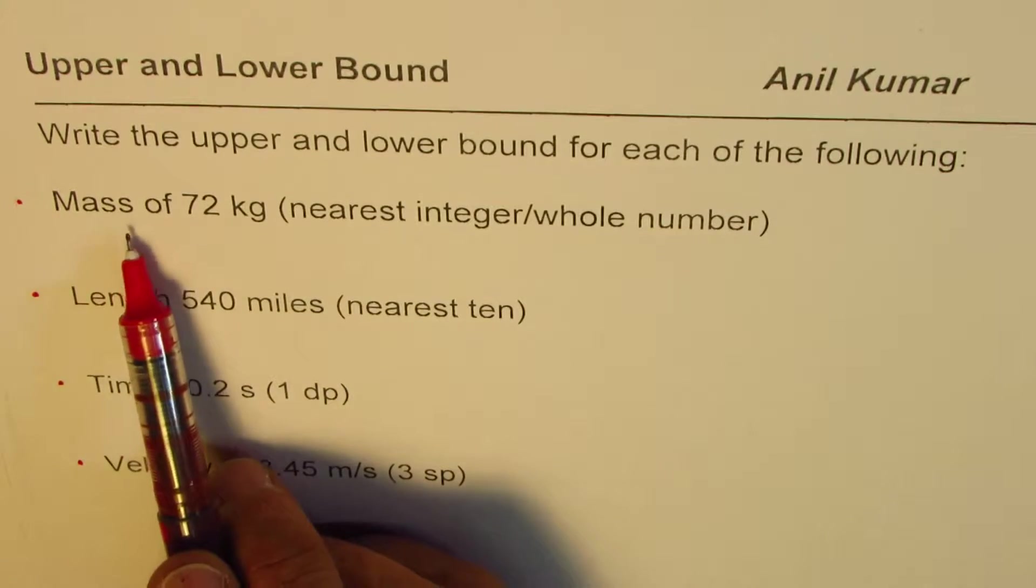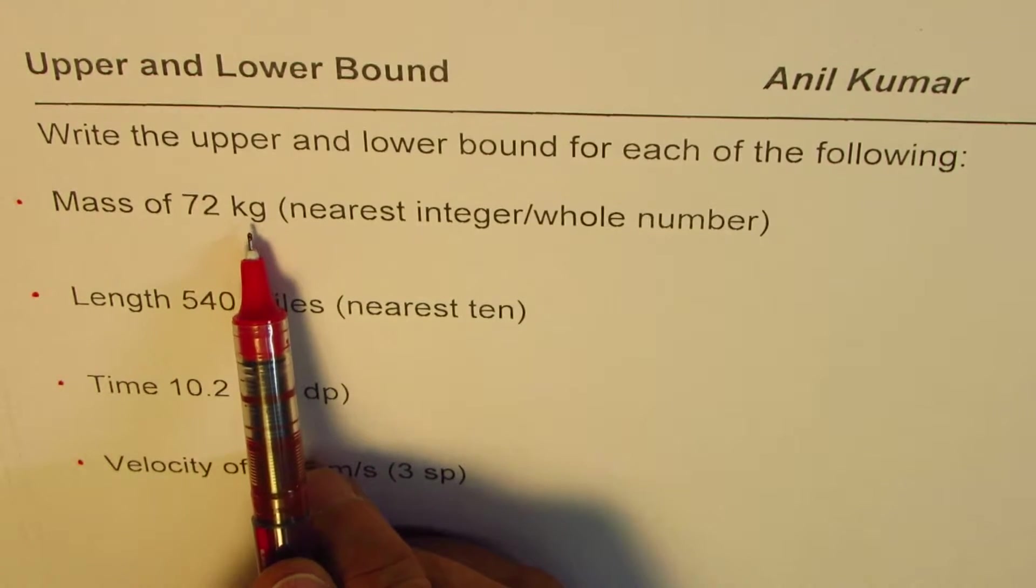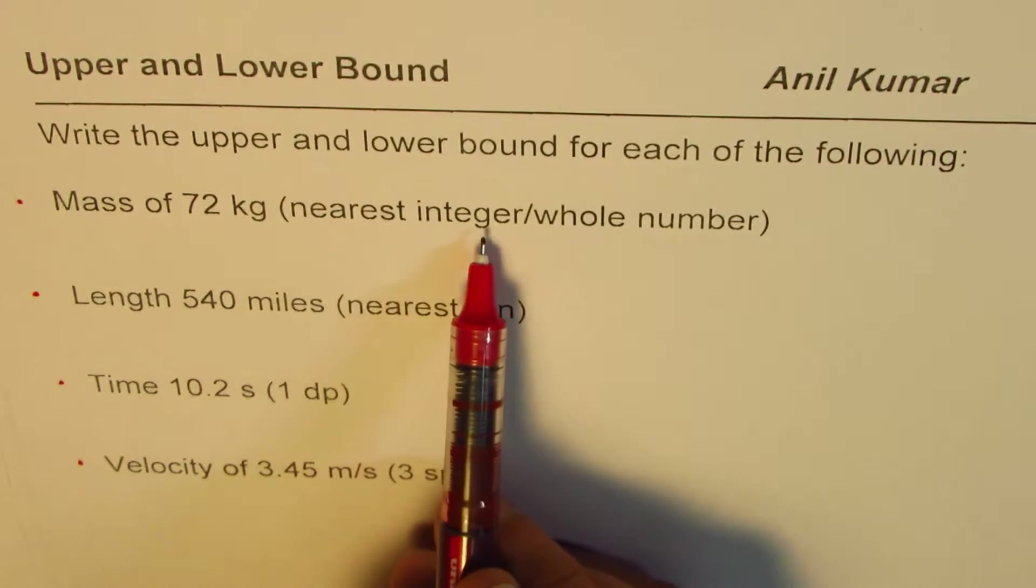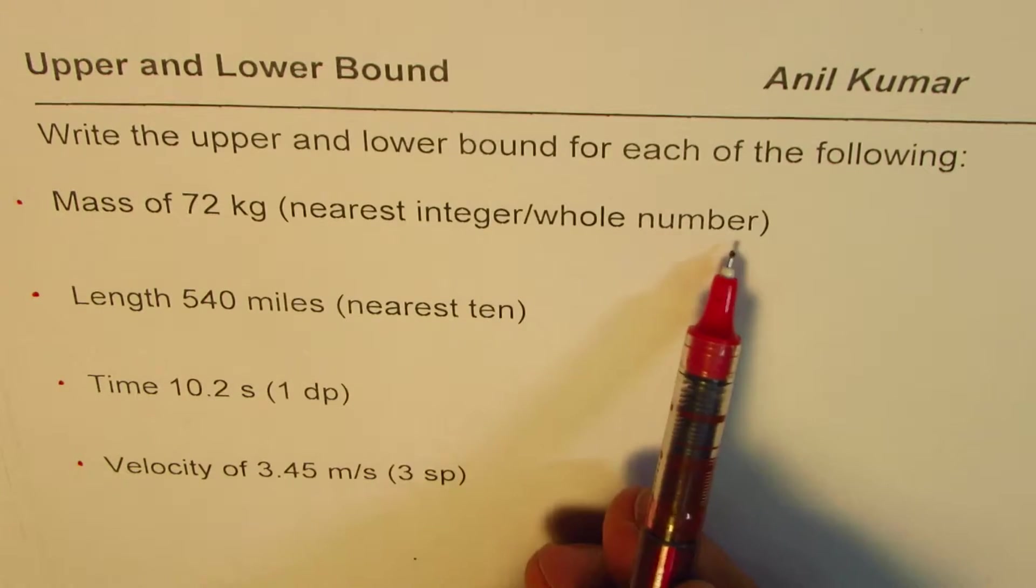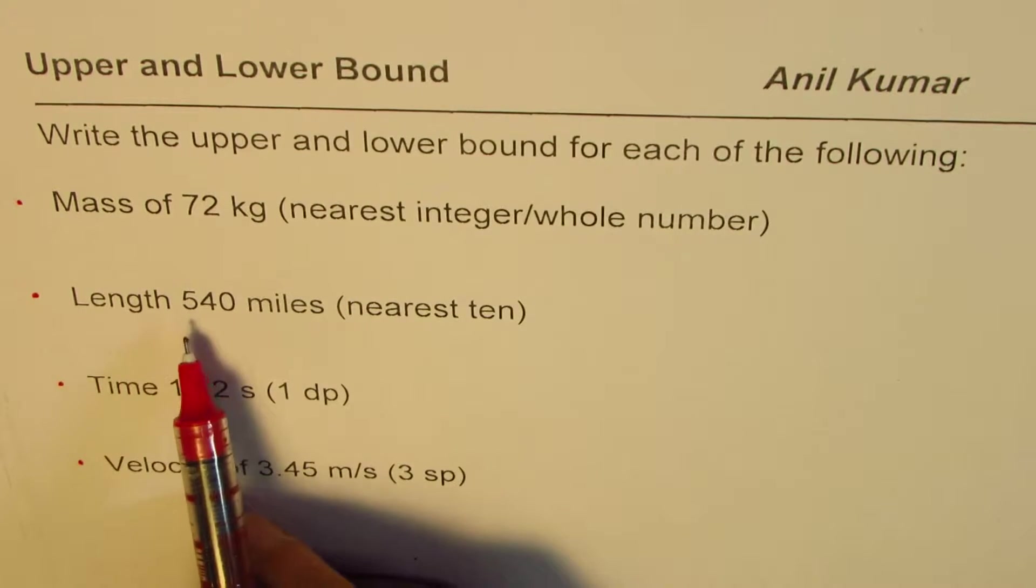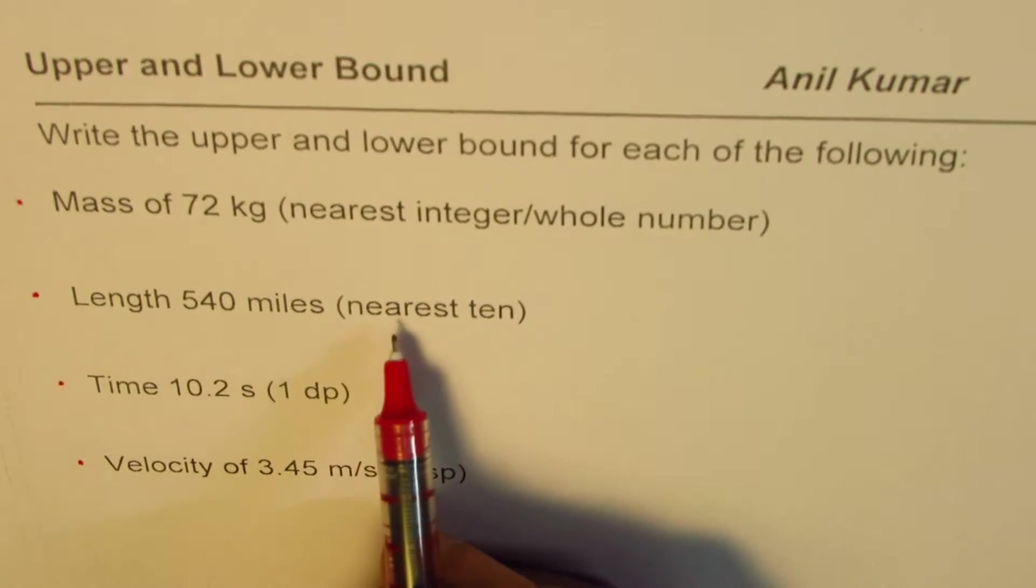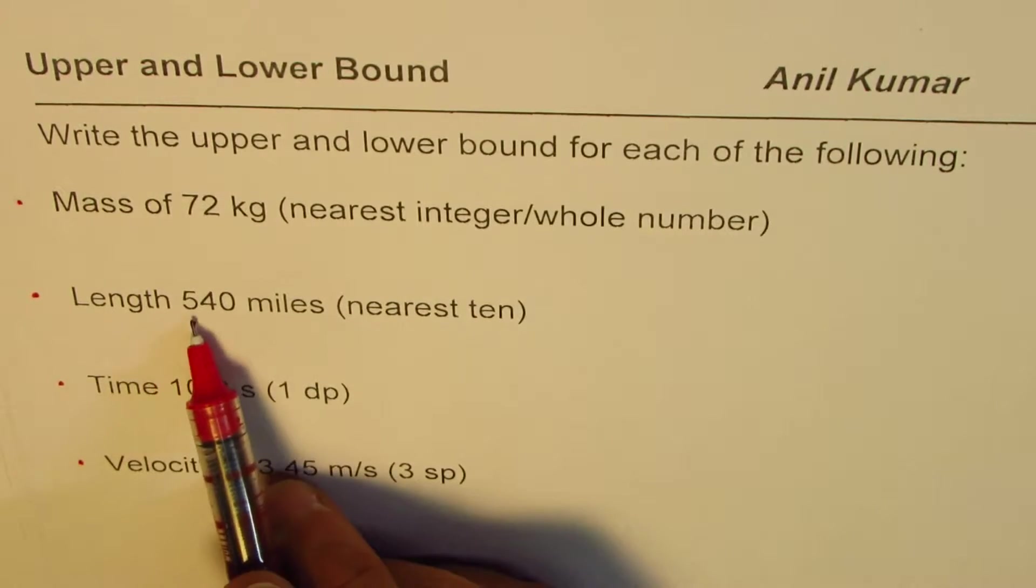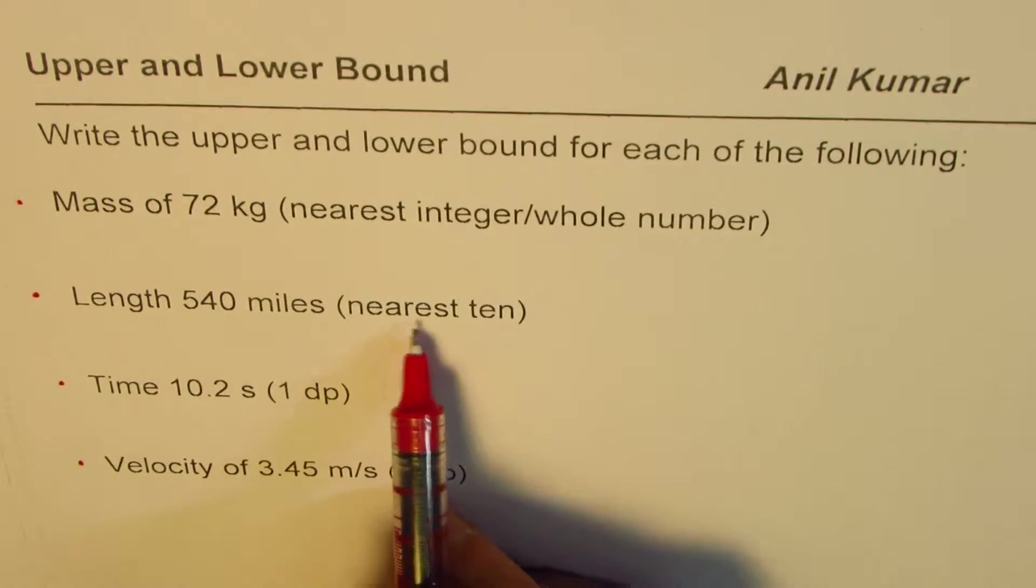Normally they are rounded to some value. In this case mass of 72 kg is rounded to nearest integer or you can see a whole number, 72 kg, so that means it's a kind of rounding. So 72.1, 72.2, 72.3 all will be grouped together as 72 kg.